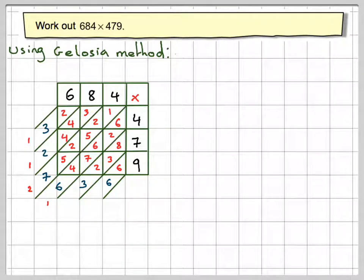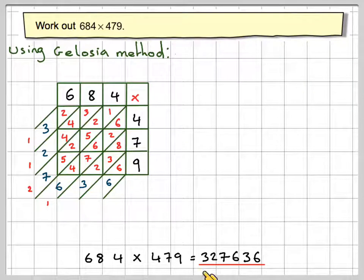you can say that 684 times 479 is going to be 3, 2, 7, 6, 3, 6, in that order. So that is 327,636.